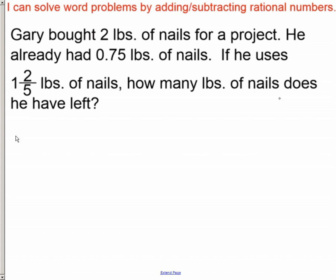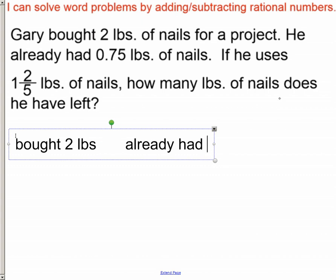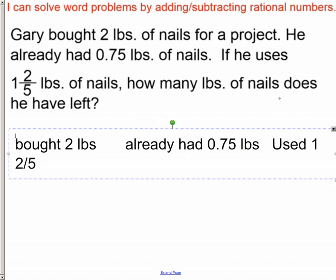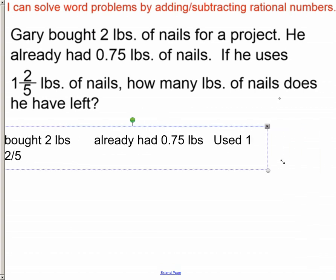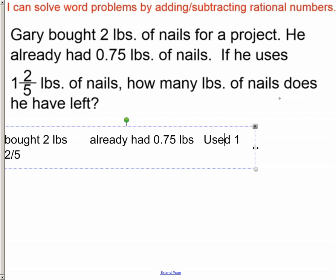Always like to write it out. So here we go. He bought two pounds, already had 0.75 pounds, and he used 1 and 2/5. Okay, so let me kind of squeeze this into here so we can see it a little better.